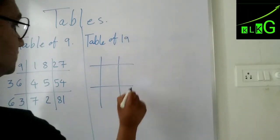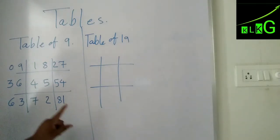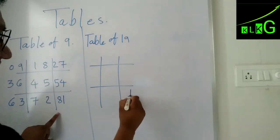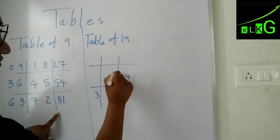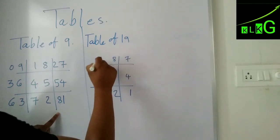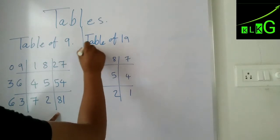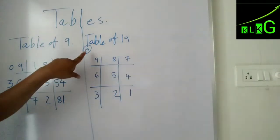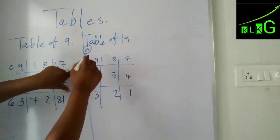As I told you, the trick is the same. We'll write here 1, 2, 3, 4, 5, 6, 7, 8, and 9. Here we are going to make the table of 19, so first you will write 1.